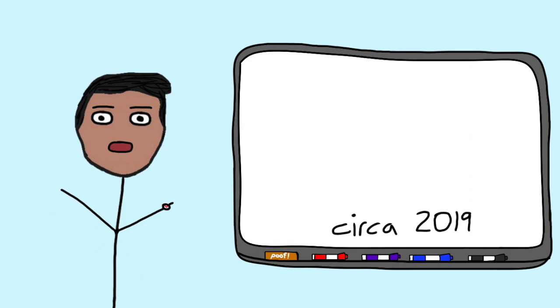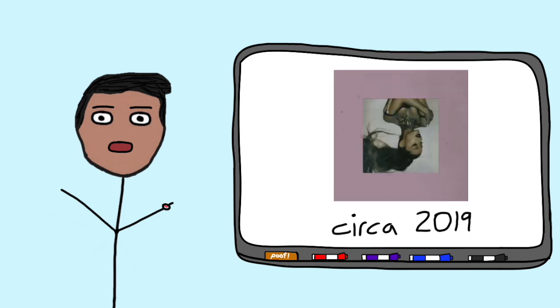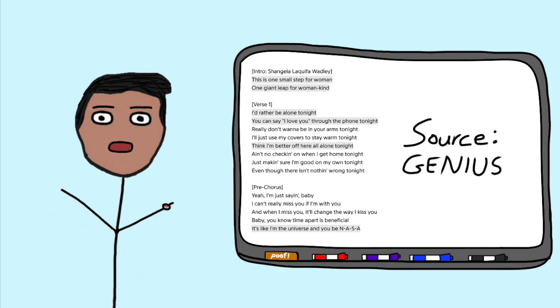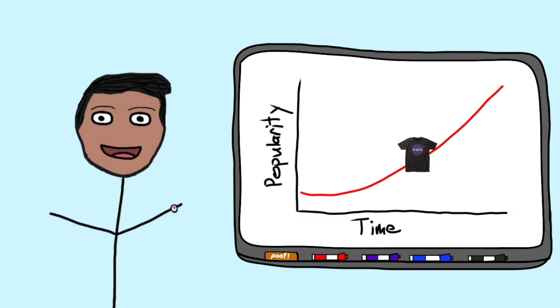NASA clothing began picking up as a trend when big-name celebrities were seen wearing the merch. Kylie Jenner and Chris Evans are just a few examples. In 2019, Ariana Grande released her fifth studio album, Thank U, Next, and the third song was called NASA, which included many references to space exploration as it was fundamentally a metaphor for needing space in her relationship. So with this level of popularity, it isn't hard to see why NASA clothing could see a short-term uptick in sales.